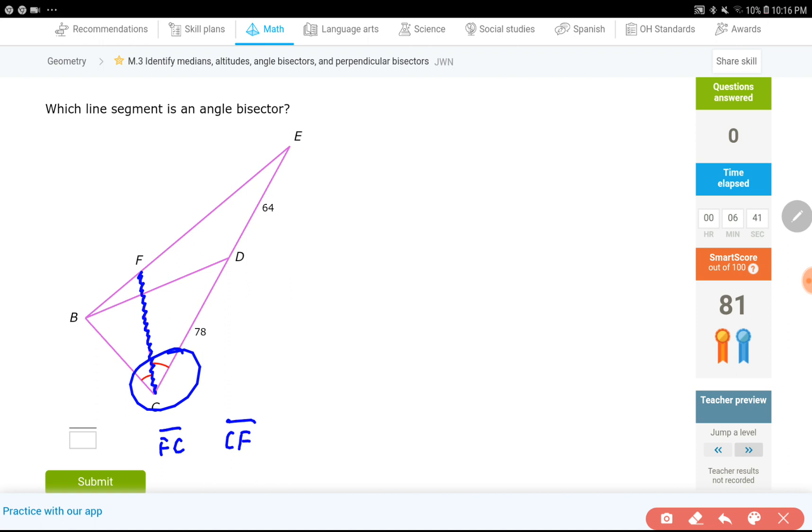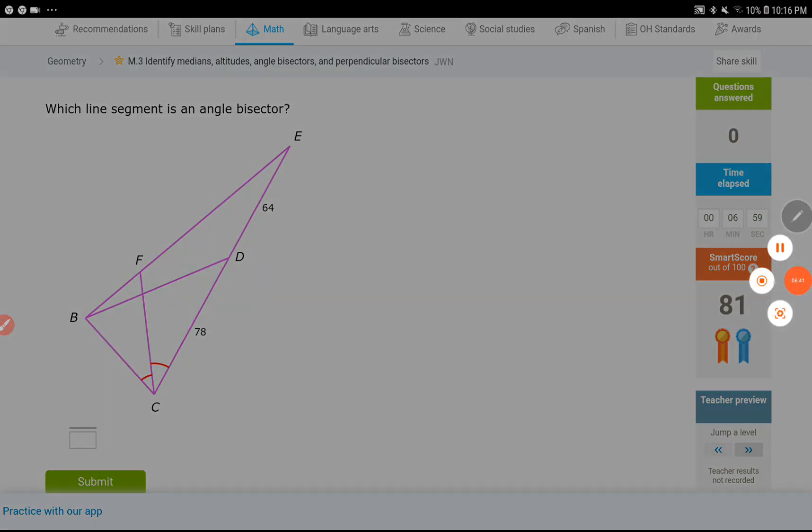So that's all for this lesson M3, identifying medians, altitudes, angle bisectors, and perpendicular bisectors. Thanks for watching, guys. I will see you in another video. And remember to like the video and subscribe to the channel if you still did not do it. That way you can get notifications whenever I share a video regarding your assignments. Thanks again. And I will see you in another video. Thank you.